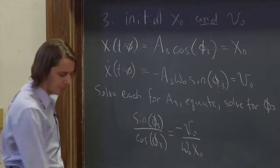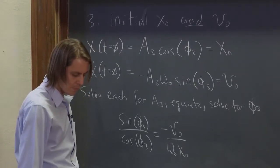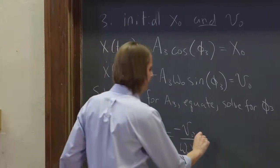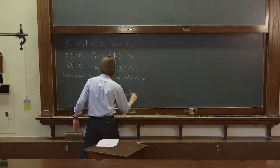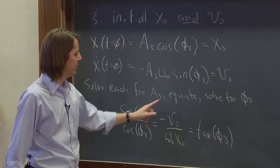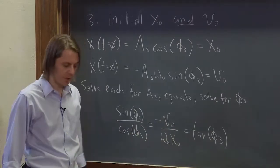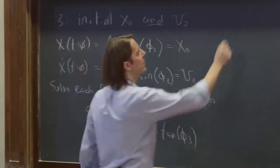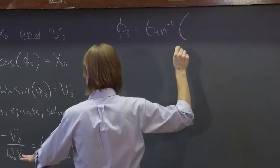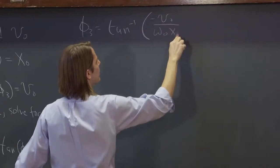Sine phi three over cosine phi three. And then what would be left on the other side would be minus v-naught over omega-naught x-naught. If you have that, then you also know that this is equal to tangent of phi three. So then you have it. Phi three is the inverse tangent of this thing here that is all just the initial conditions and properties of the system, v-naught, x-naught, and omega-naught. So phi three is the inverse tangent of minus v-naught over omega-naught x-naught.